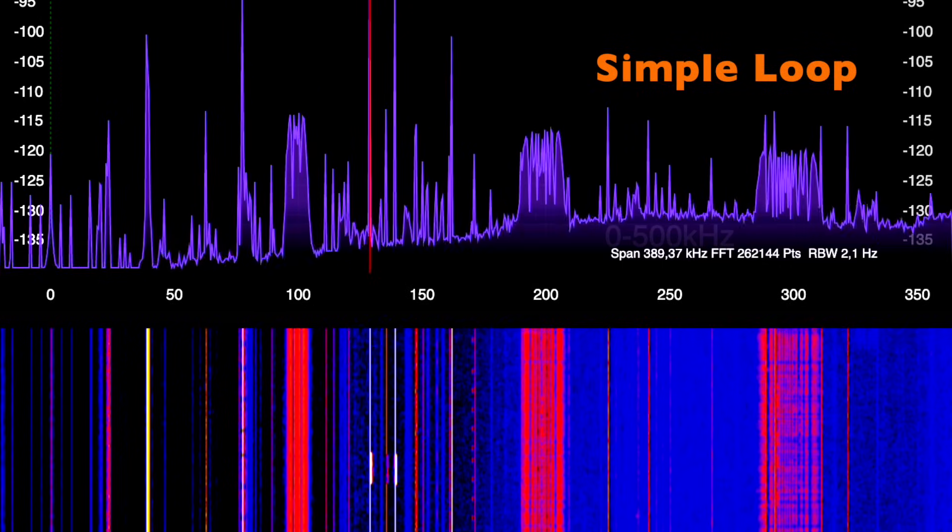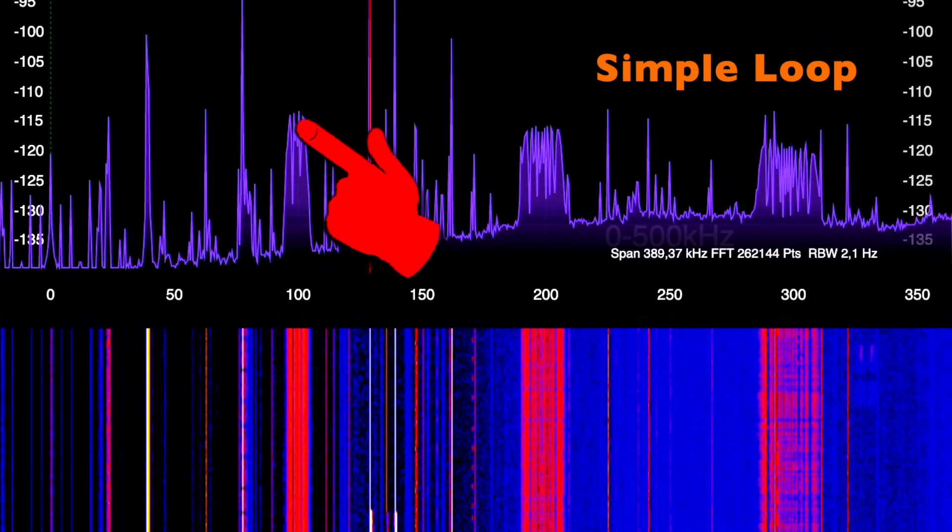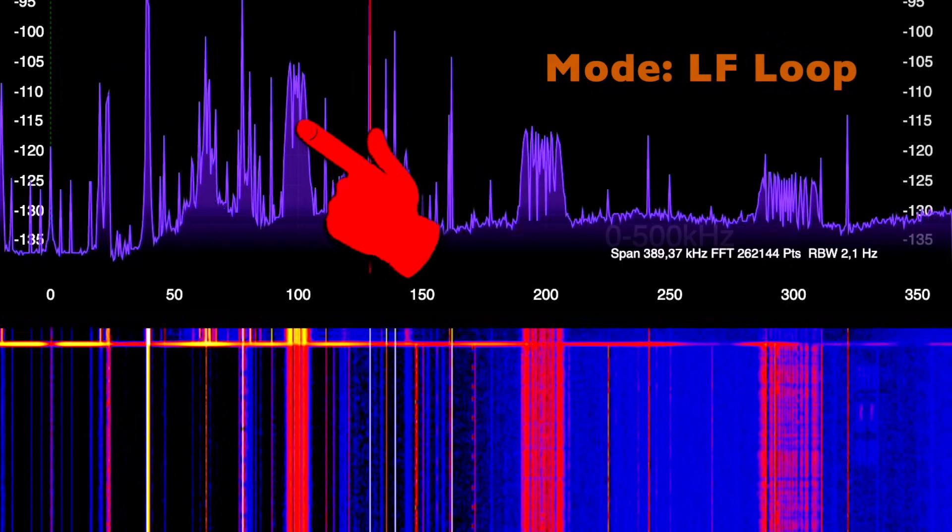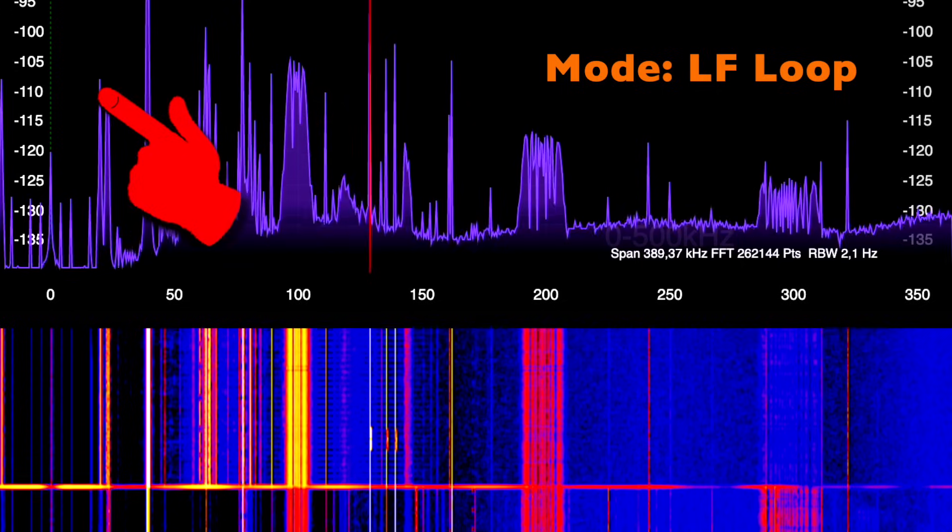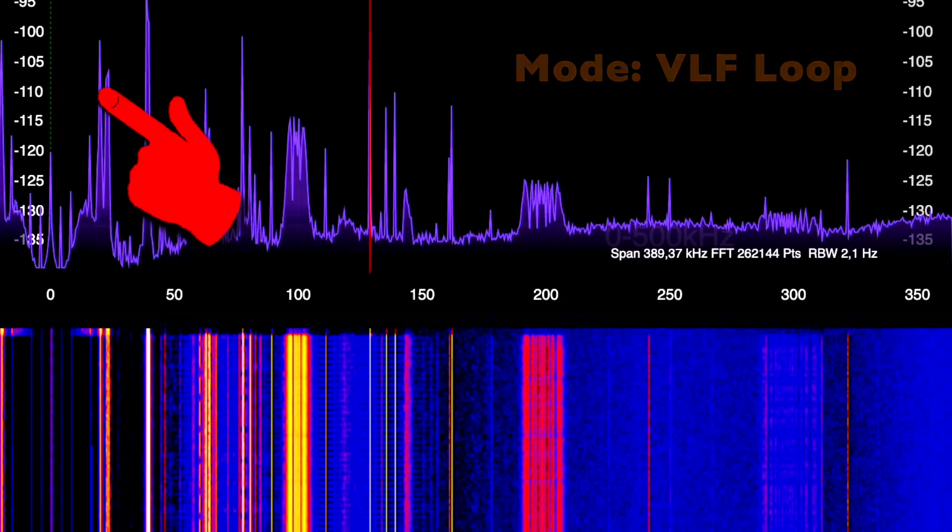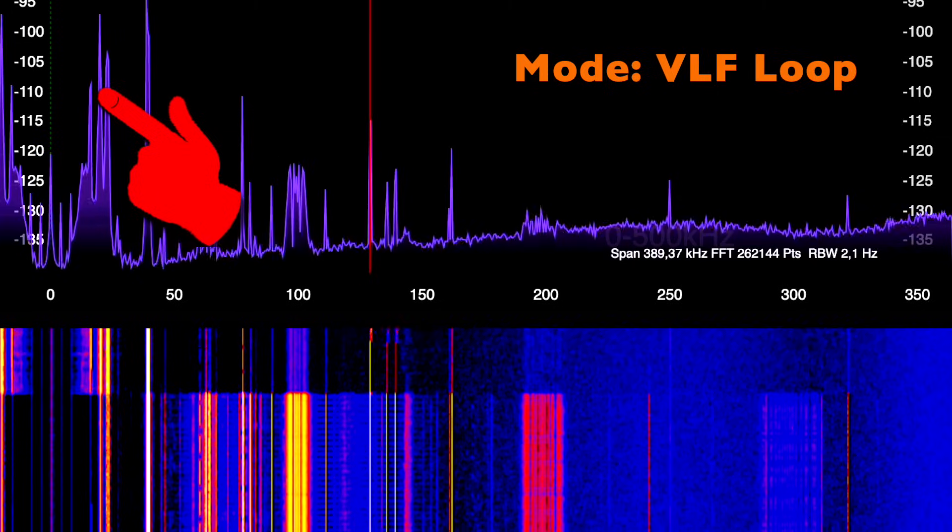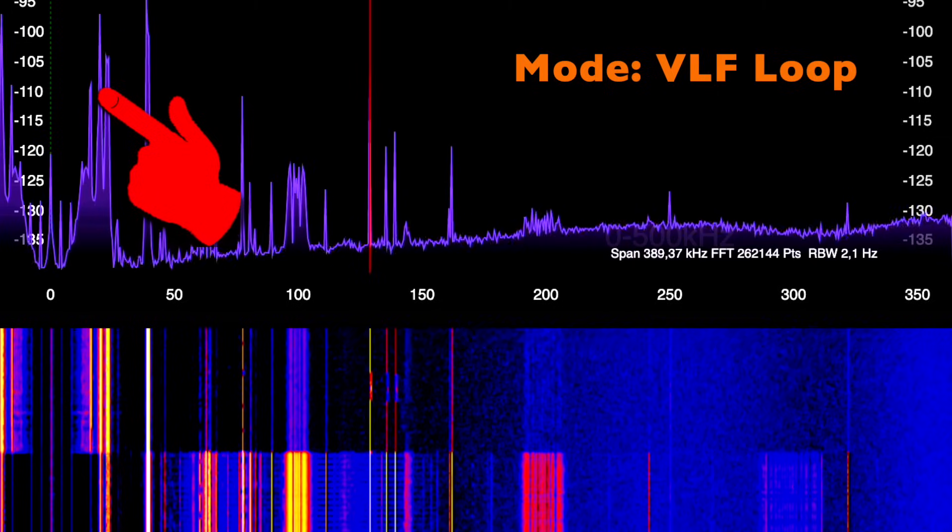When switching from the conventional loop to the new one in LF mode, low frequency signals are increasing. Switching to VLF mode, the reception levels at the very low end are increasing further.